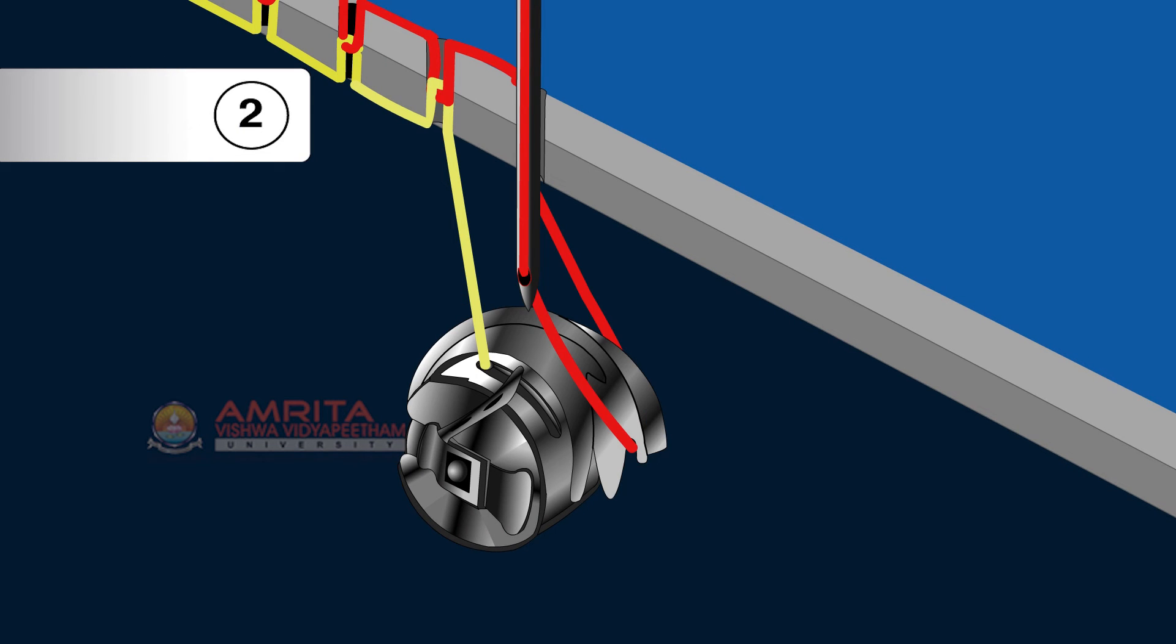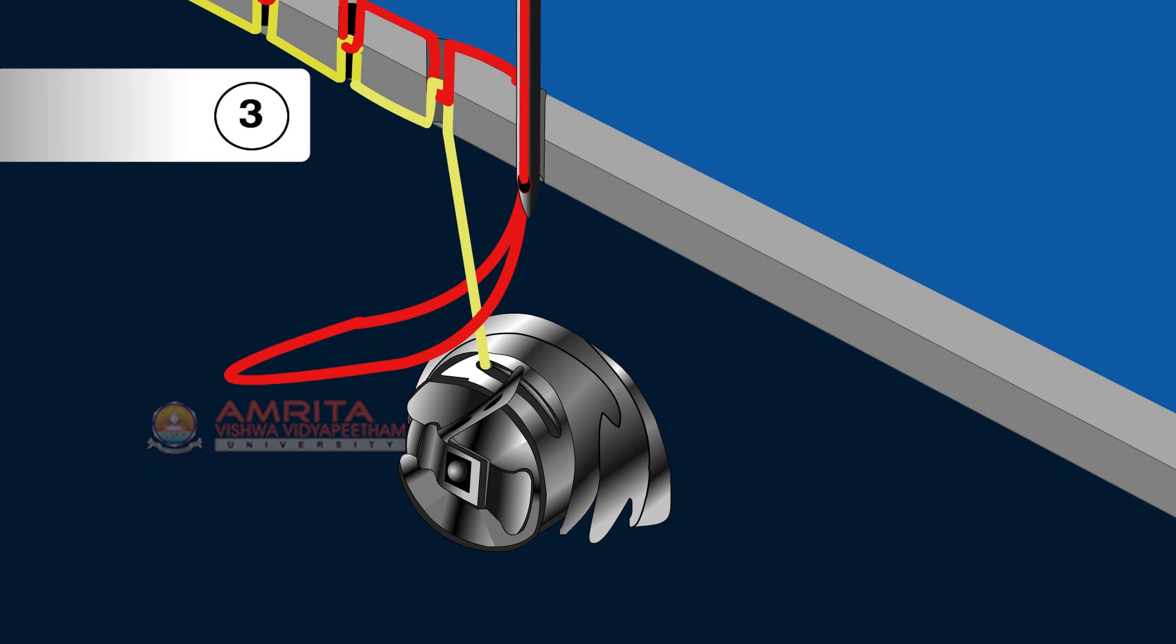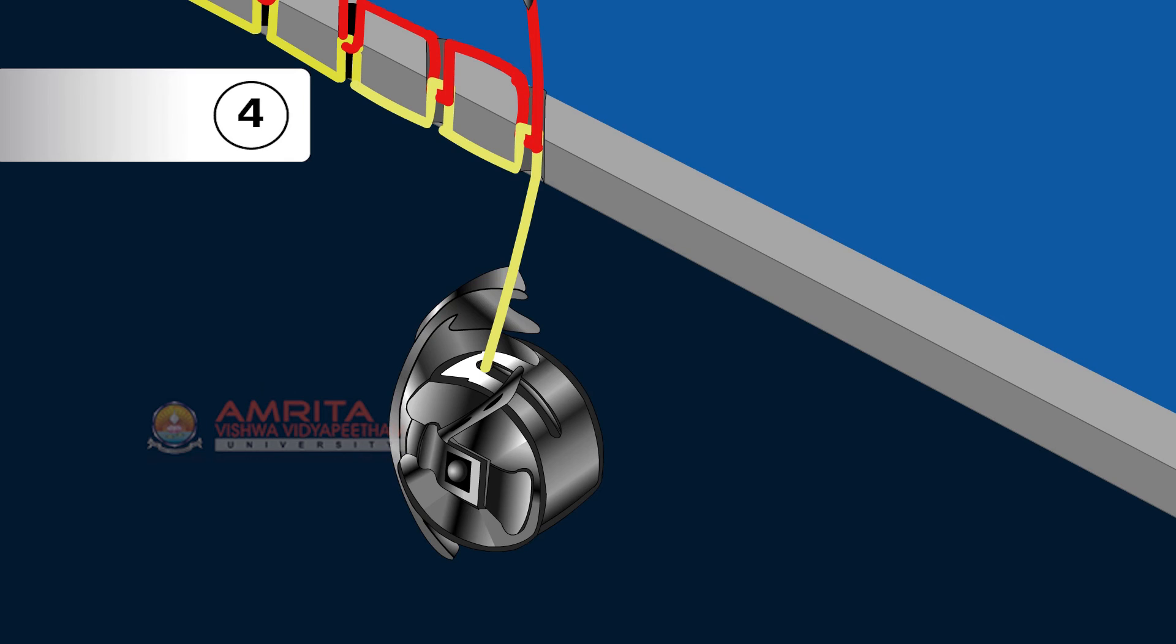A rotating shuttle hook enlarges the thread loop. The thread from the needle is brought around bottom thread spool. The two threads knot and form a stitch to hold the fabrics together.